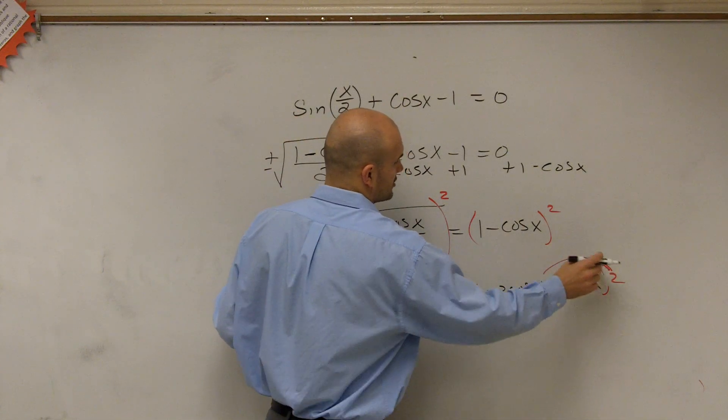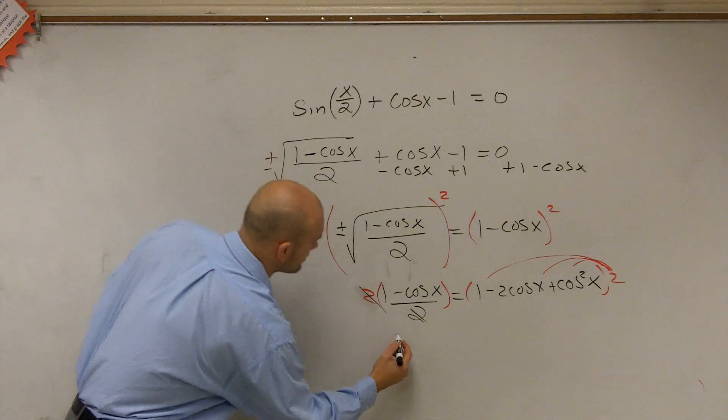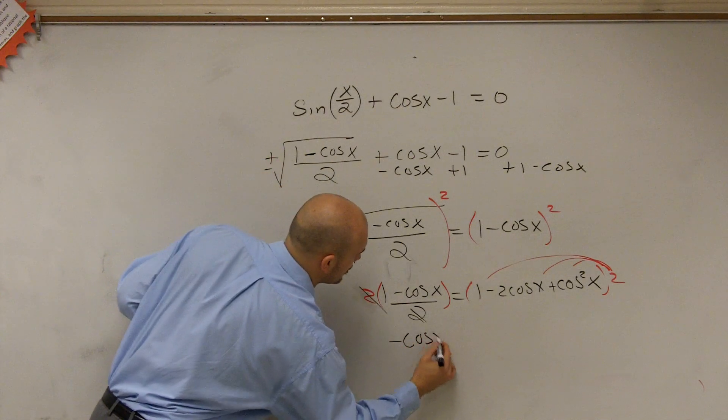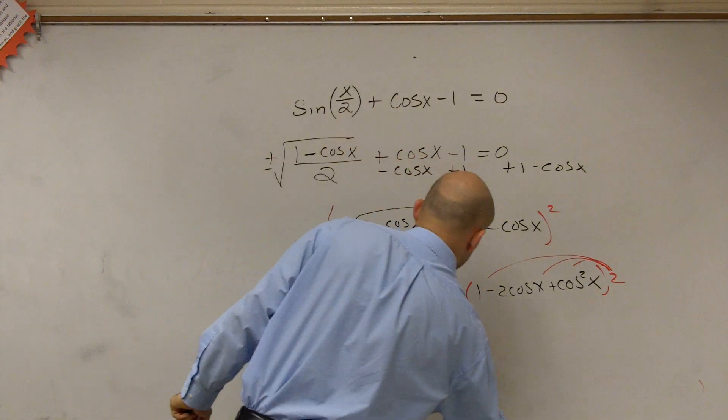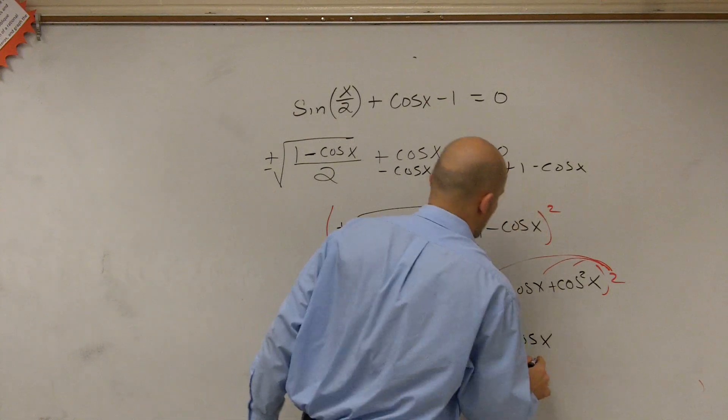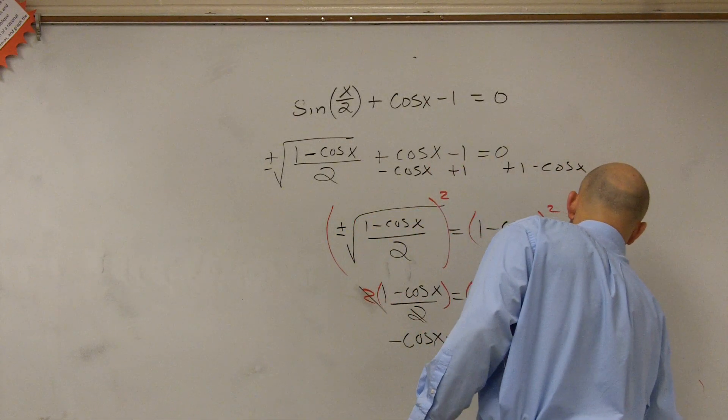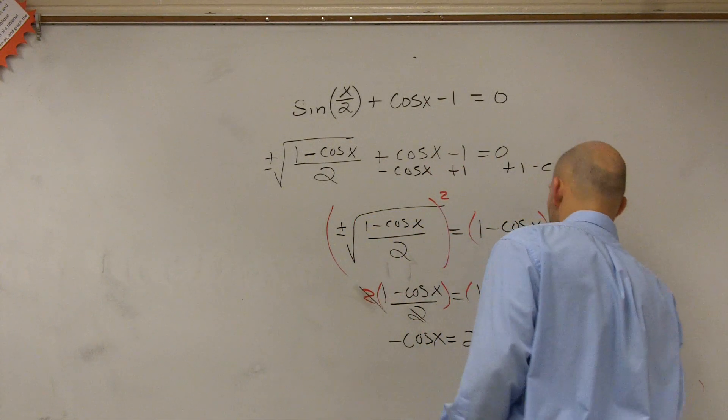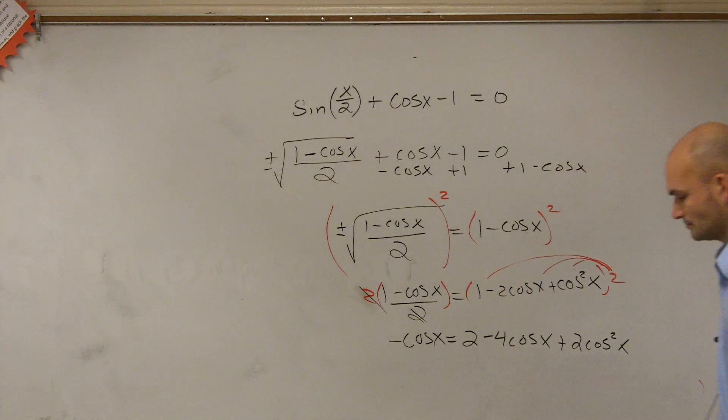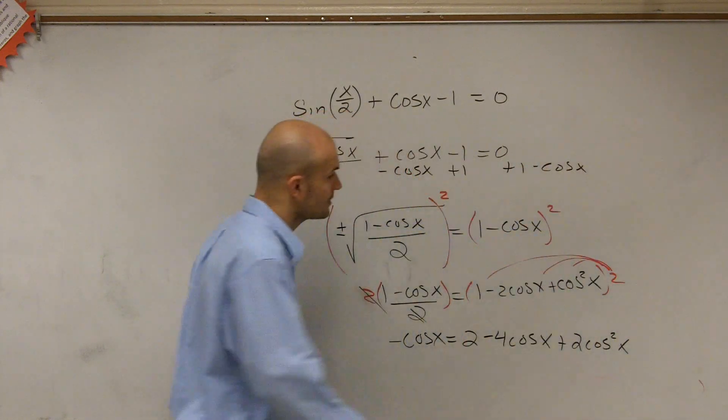But here, I've got to make sure I multiply this 2 times everything. Now leave me with negative cosine of x equals 2 minus 4 cosine of x plus 2 cosine squared of x. I'm sorry?